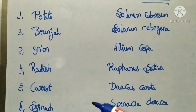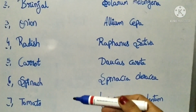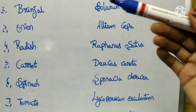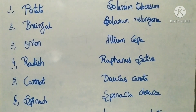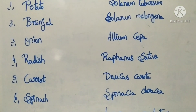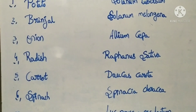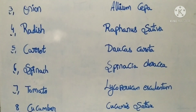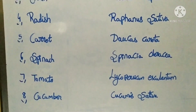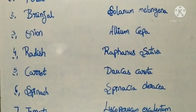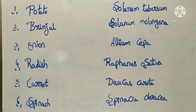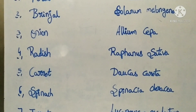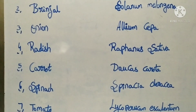For competitive exams like CGL and UPSC, these topics are important. Potato, brinjal, onion, radish, carrots, spinach, tomato, cucumber — these scientific names are definitely asked in exams. Notes are available as a PDF in the description box. Let us look at the notes.